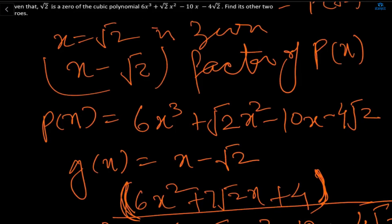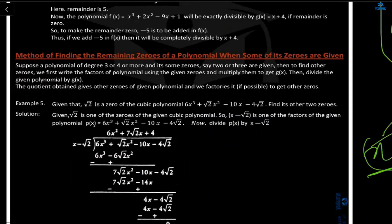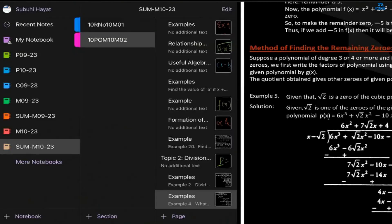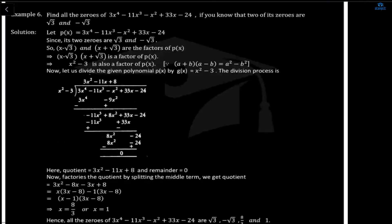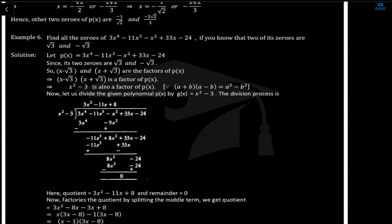These topics need a little more practice. Whatever questions you get in the assignment, practice before the next class. Now question number 6: find all the zeros of 3x⁴ - 11x³ - x² + 23x - 24, given that two of the zeros are √3 and -√3. Since the degree is four, the polynomial has maximum four zeros. Two are given, so we need to find the other two.